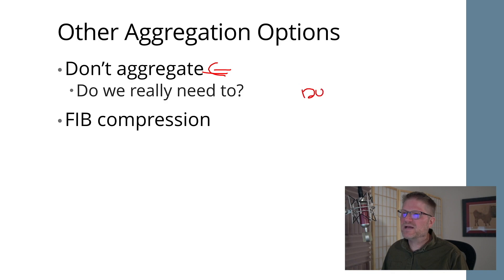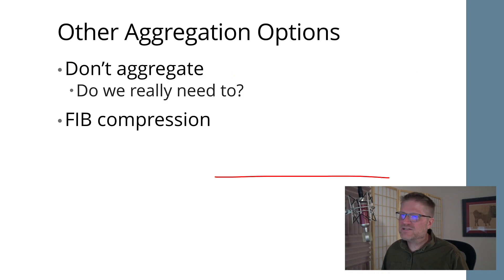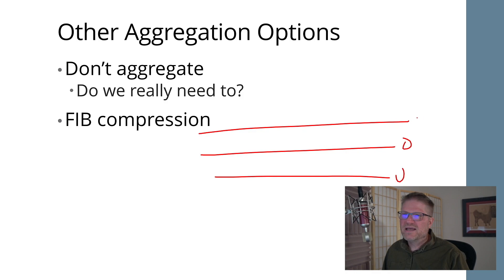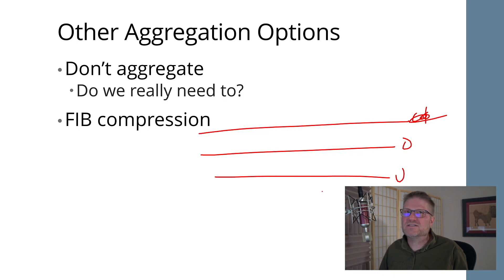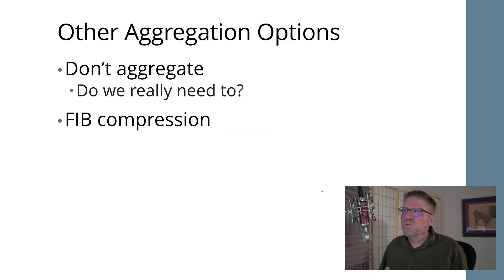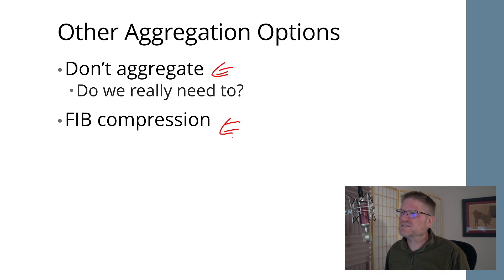Another aggregation option is simply: don't aggregate. If I can scale my underlay protocol to 120,000 routes and 2,600 devices, why do I care about aggregation? What I'm trying to do in a data center fabric is build vertical layers — underlay, overlay, and potentially a controller layer — to build a larger, flatter network fabric. If I can really scale out, why aggregate? There's also a compression approach between the routing table and the FIB, implemented in Cisco IOS, though it was never really shipped widely.